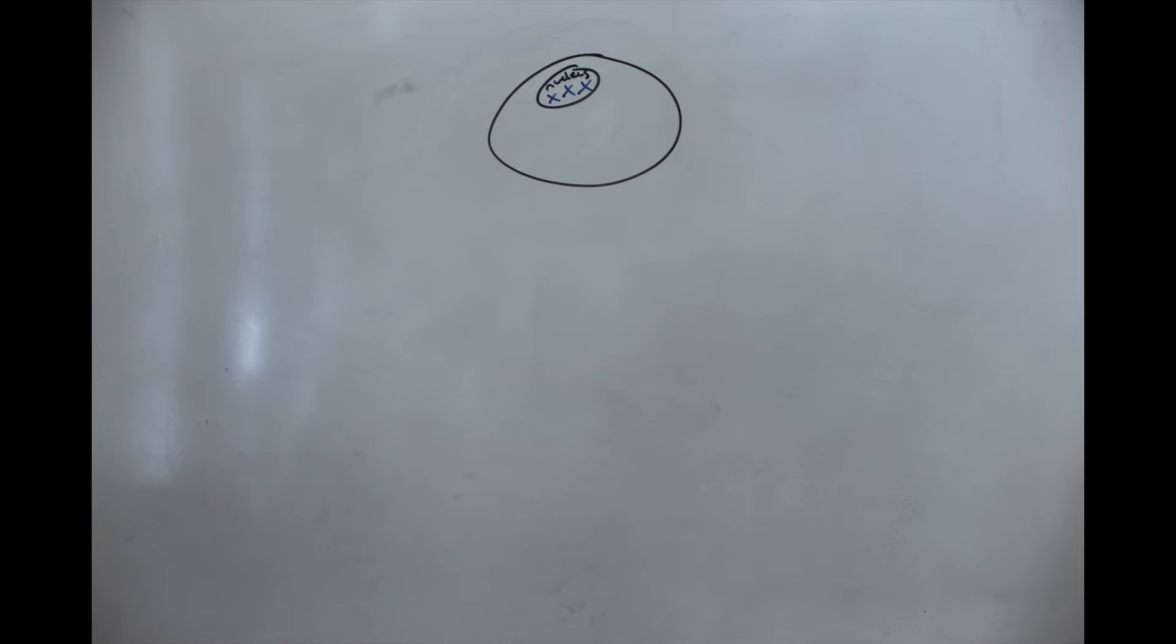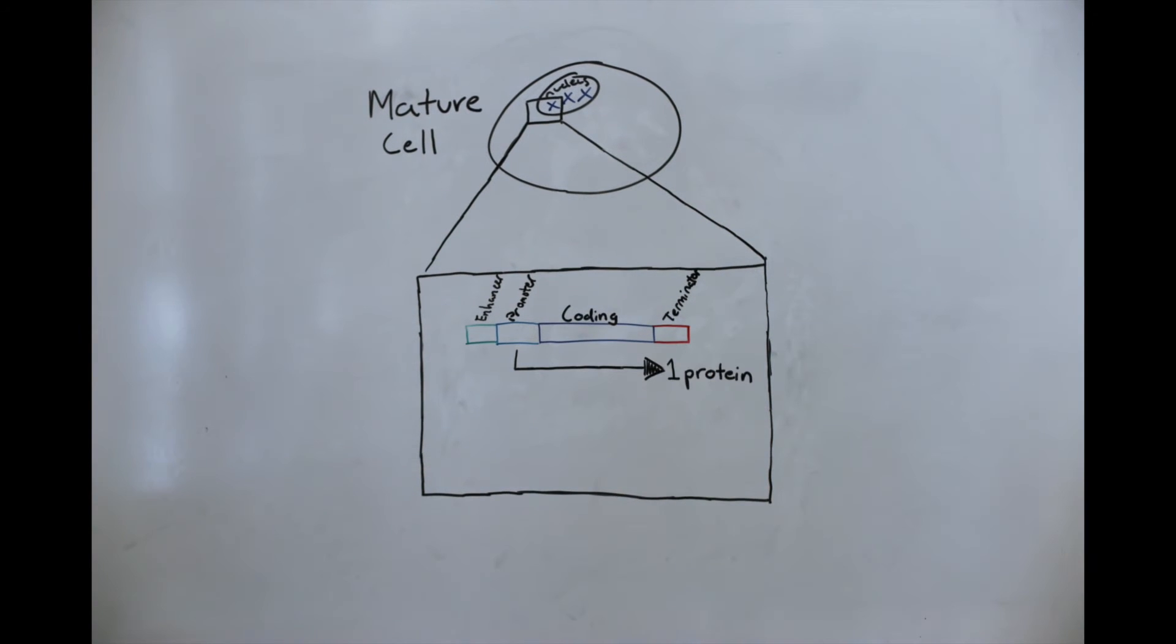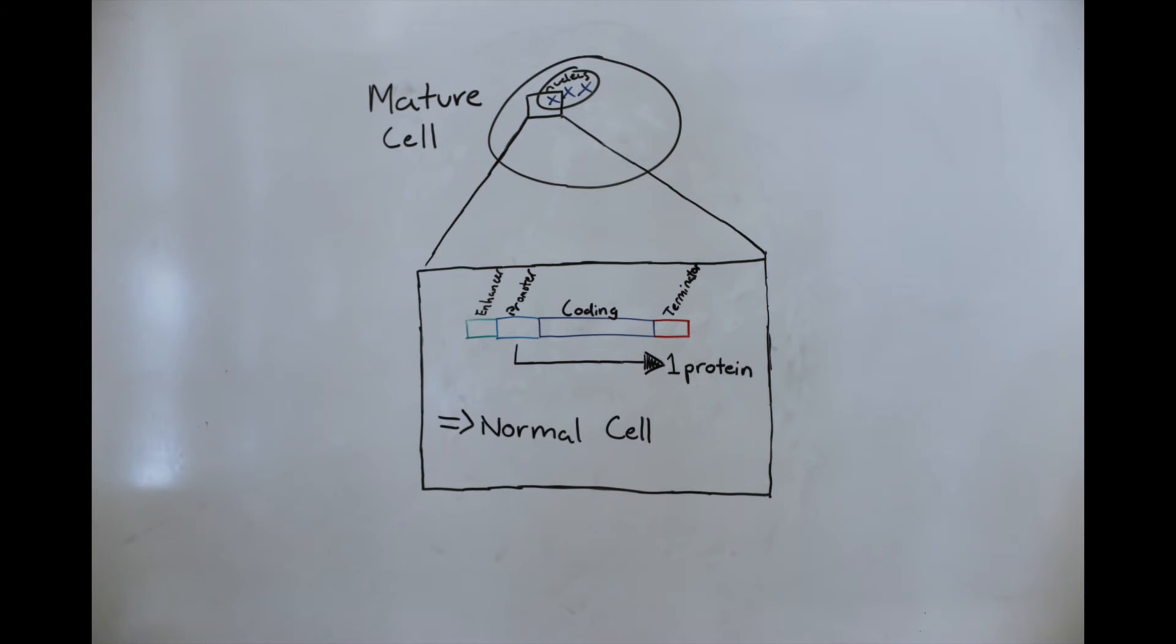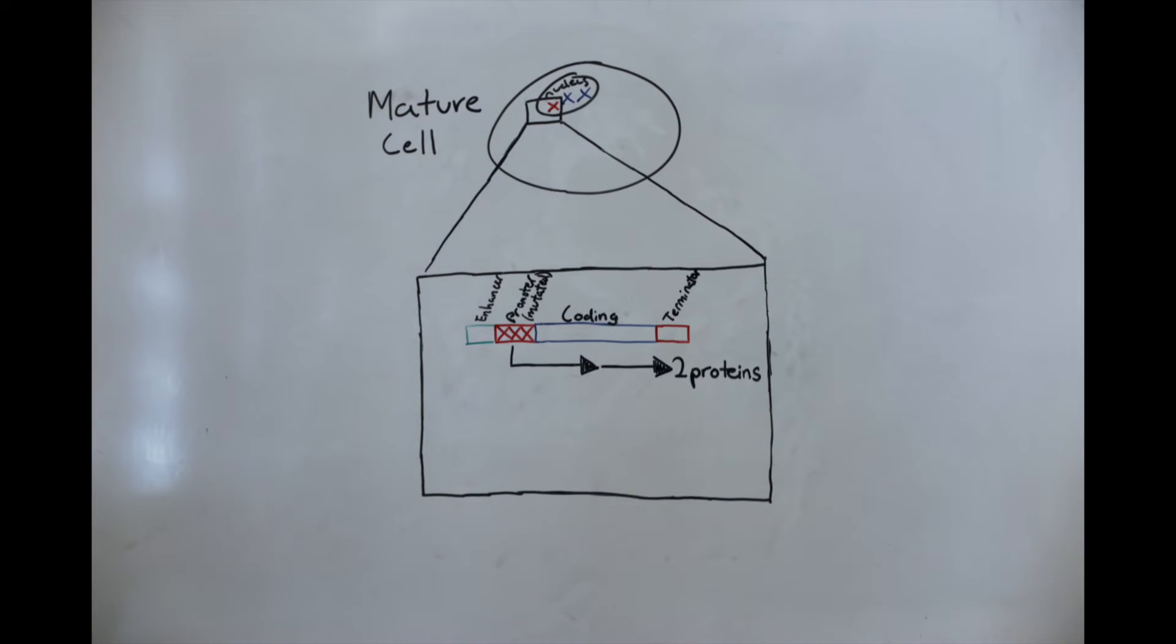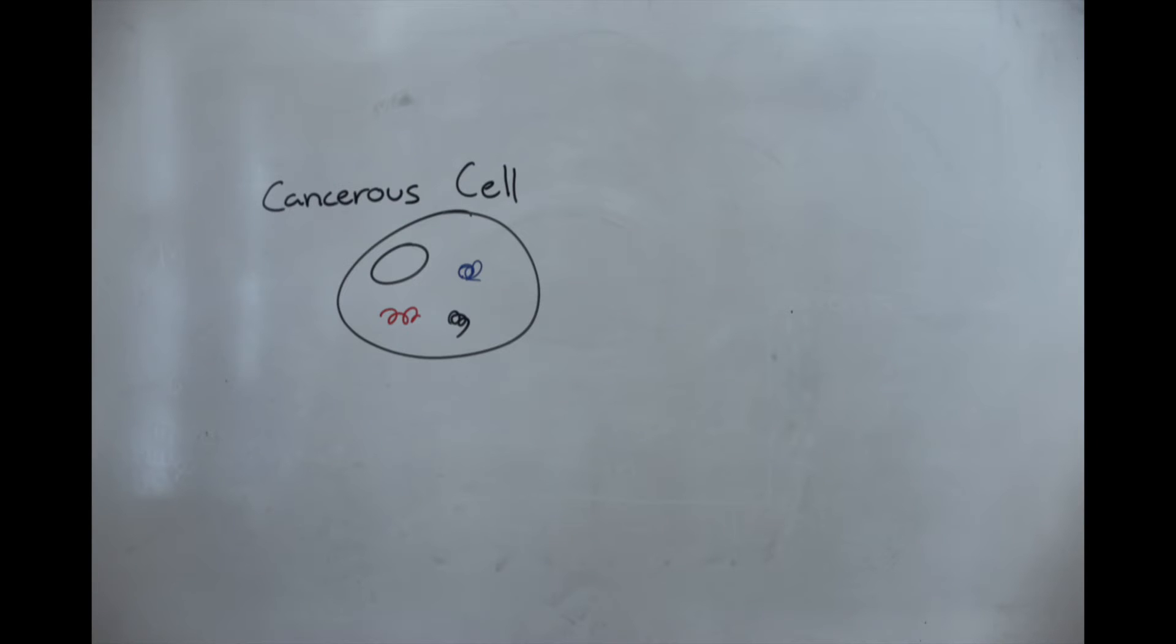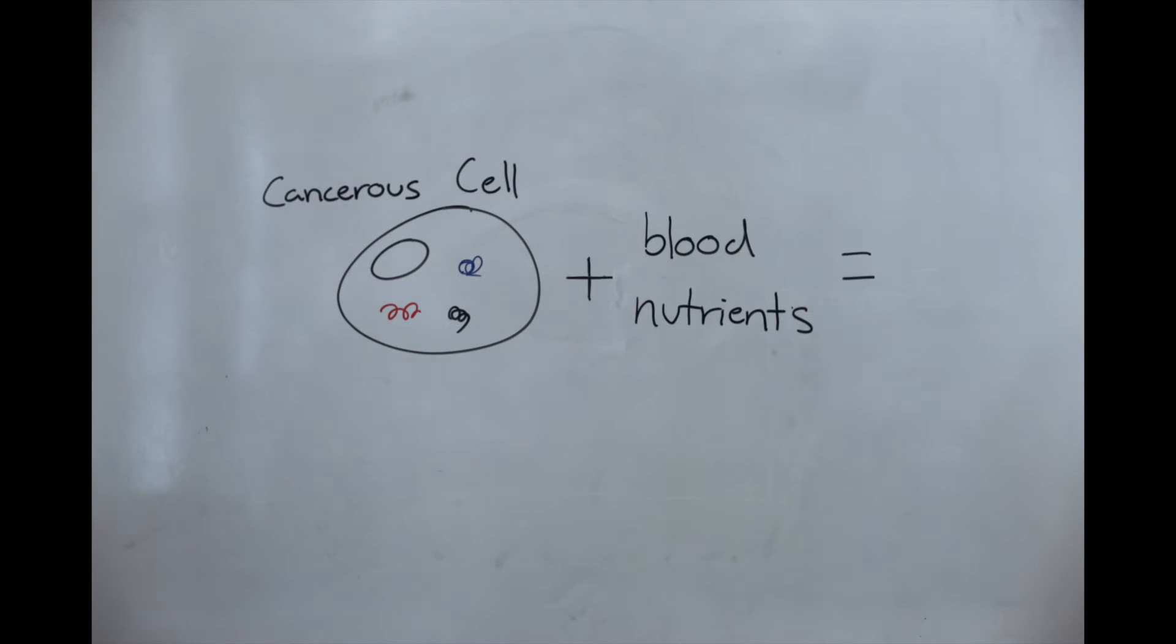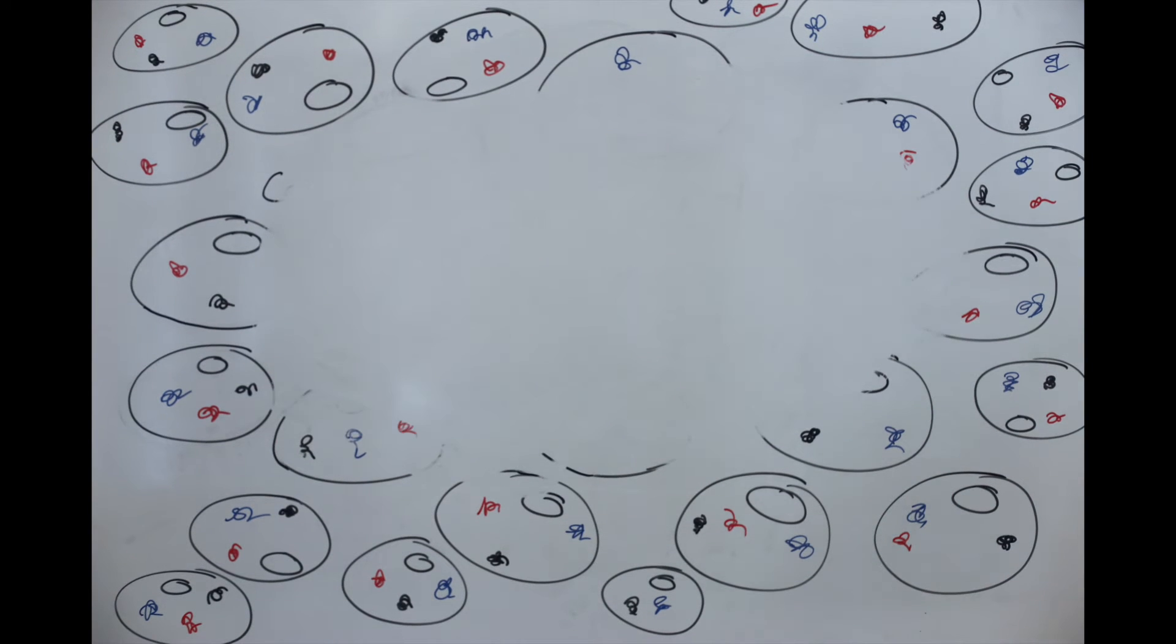In mature cells, angiogenesis genes are usually turned on low, and few proteins are expressed, giving normal function. When a mutation occurs in the regulatory or non-coding region of these genes, the coding regions of angiogenesis proteins can become constantly activated and express too many proteins. More blood and nutrients will then be sent to the cells, helping them grow. High rates of angiogenesis do not cause cancer, but rather aid cancerous cell growth.